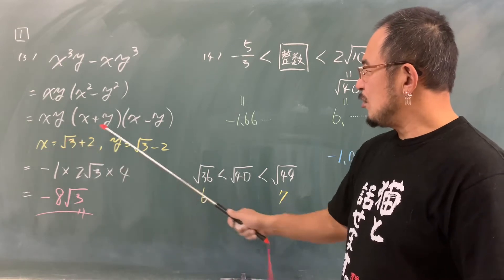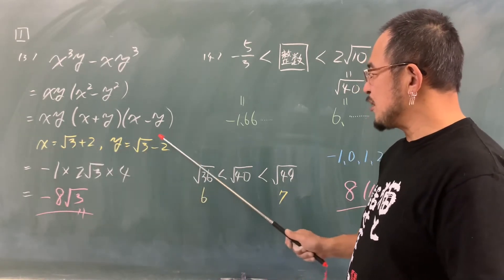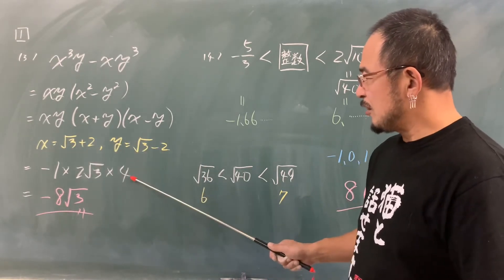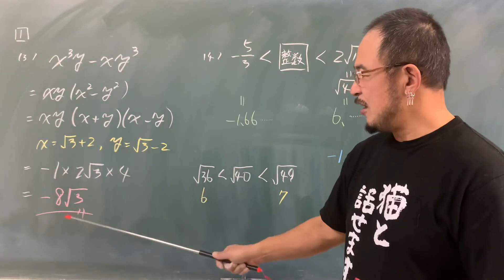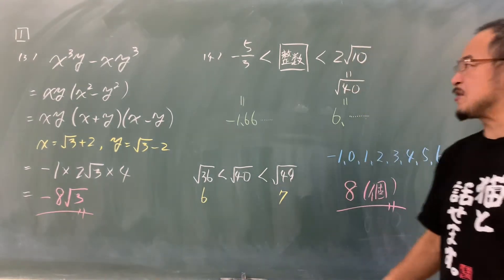-4で-1。次、足すと√2が消えて2√3。次、引くと√3が消えて2-2で4。計算して、-8√3となります。次、√3分の5より大きく2√10より小さい整数ということで、これは5÷3とやれば1.6666というのが出ます。